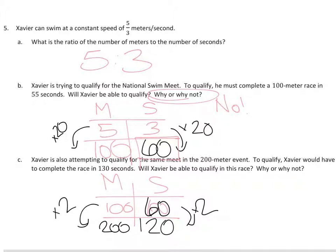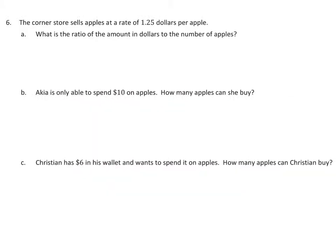Did he qualify this time? He was supposed to swim 200 meters in 130 seconds, and he swam 200 meters in 120 seconds — yes, he swam fast enough. Explain why he did qualify. Now let's look at the last problem, number 6, which is about apples per dollar. There's $1.25 for one apple, and the first question asks for the ratio, which is $1.25 per one apple. That's the ratio that sets up our problem.